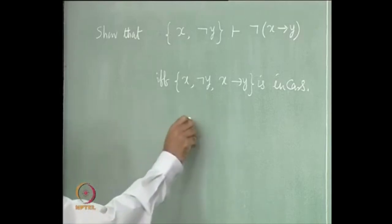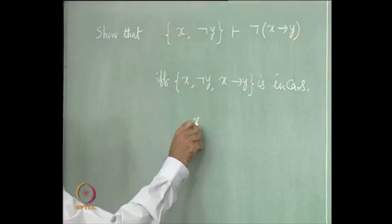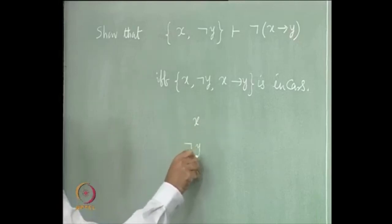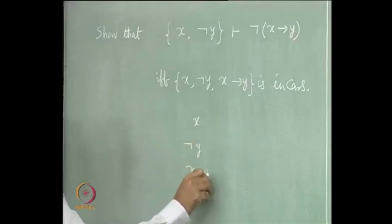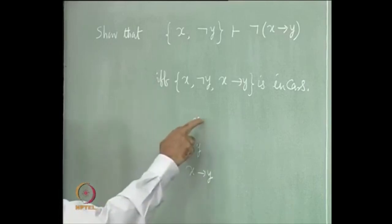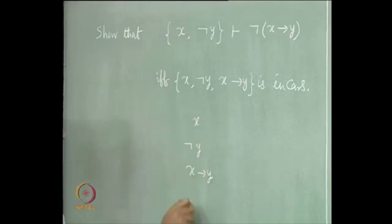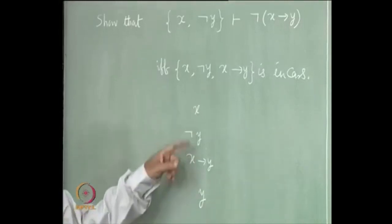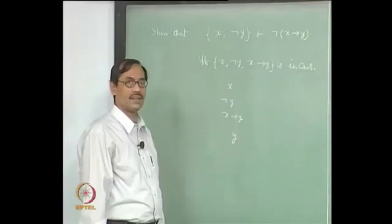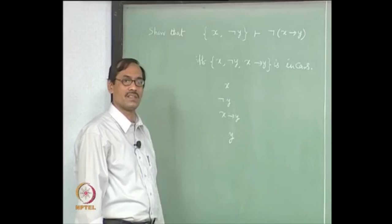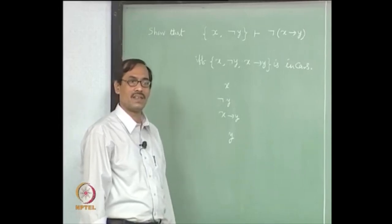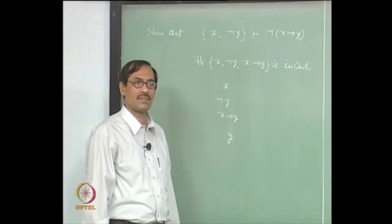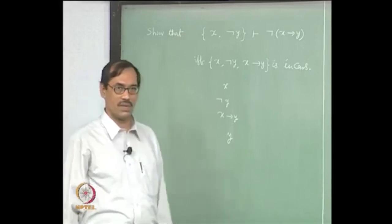Because you can have a proof like: x, then not y, x implies y — all these are premises. Then use modus ponens on x and x implies y to get y. So y and not y are both present, so it is inconsistent. Is that clear? This will be useful. We will see where.